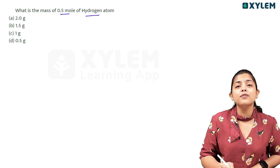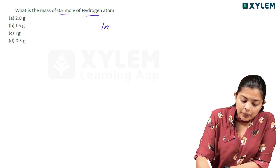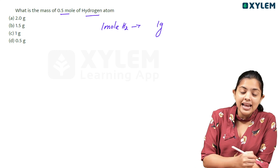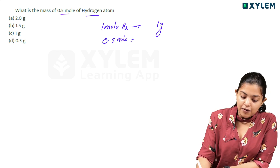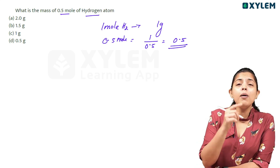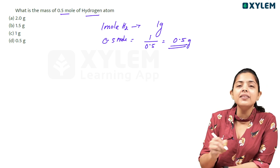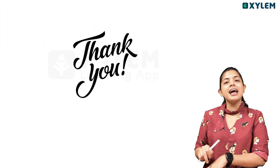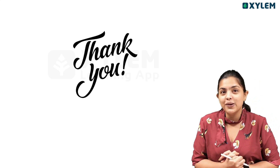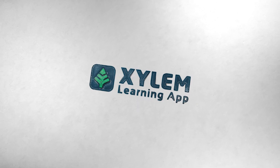What is the mass of 0.5 mol of hydrogen? One mol of hydrogen is equal to 1 gram. So 0.5 mol of hydrogen is equal to 0.5 grams. We have discussed this in the chapter. Thank you.